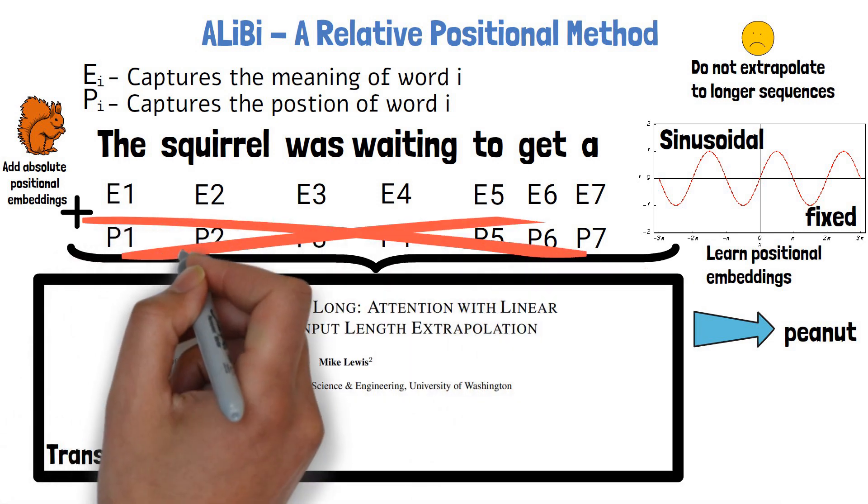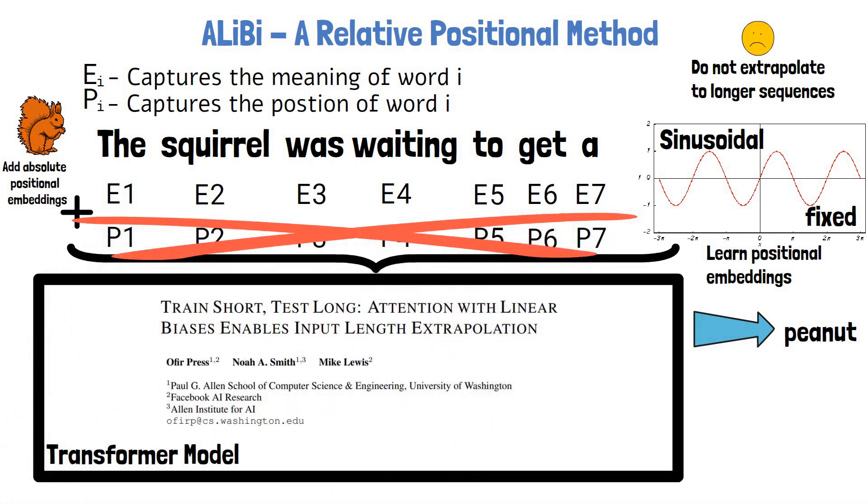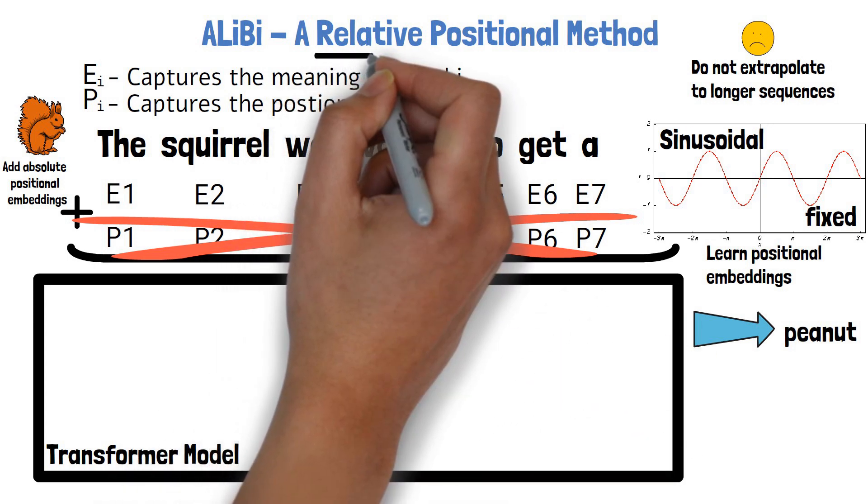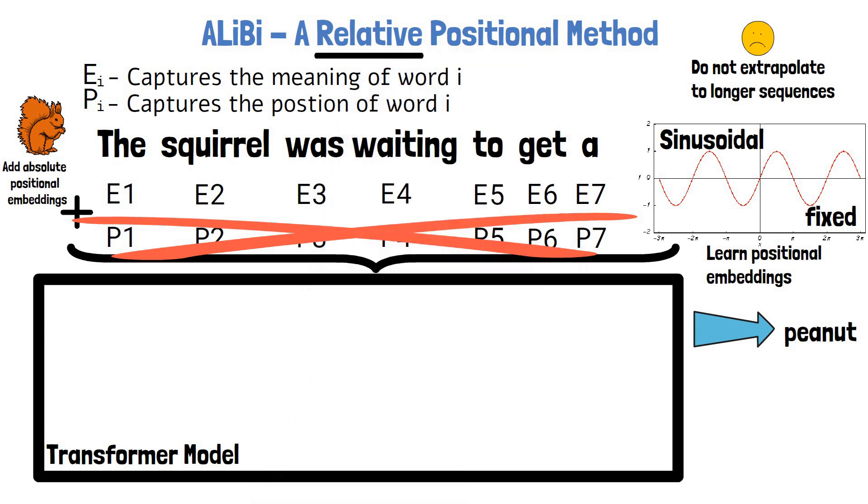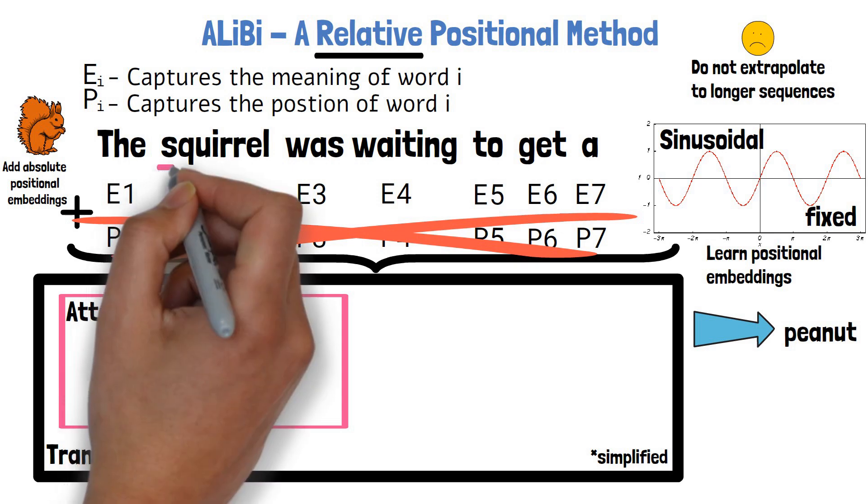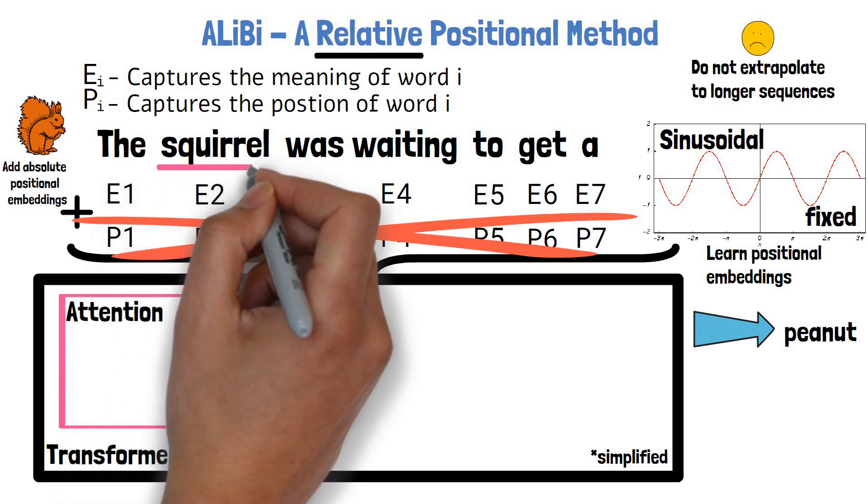So ALiBi paper suggests to not add these absolute positional embeddings, but rather just provide the model with the word embeddings and add relative information regarding the position of the words as part of the model architecture. The way they do that in a simplified description is by a small change in the attention layer of the model.